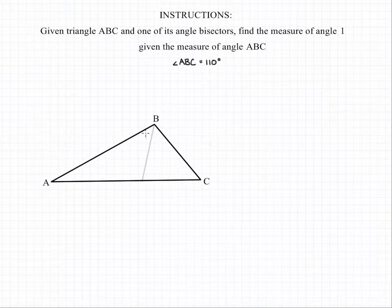In this problem we have angle ABC being divided by a bisector into two angles which we're going to call angle 1 and angle 2. Now because they're the result of a bisector, angle 1 and angle 2 are equal.